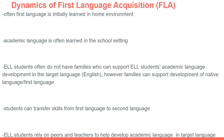ELL students rely on peers and teachers to help develop their academic language and target language. It's very important to have mixed grouping where students with higher academic language are paired with students with lower academic language. Students with higher academic language benefit from practicing and re-teaching material, while students with lower academic vocabulary benefit because they often pay more attention to peers than to their teachers. The teacher should also make a concerted effort to build academic language and vocabulary.